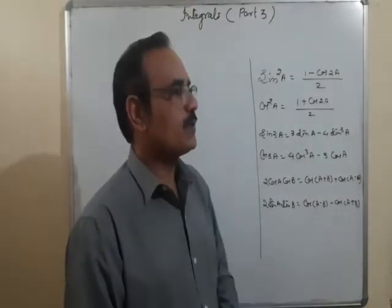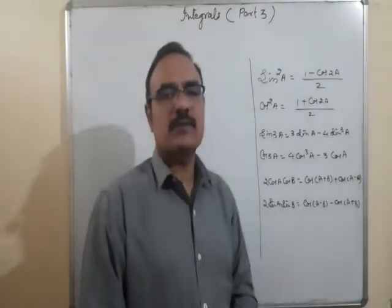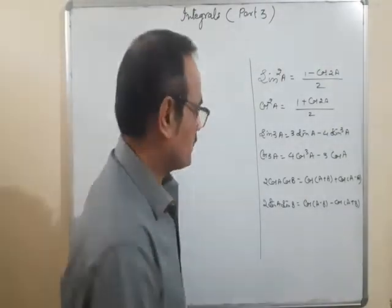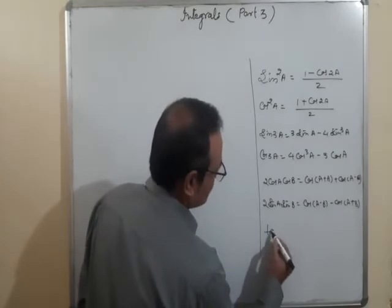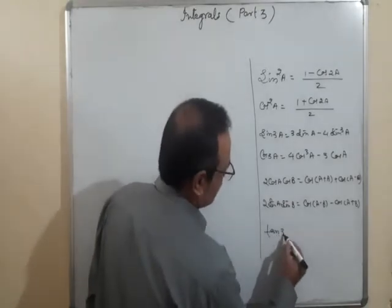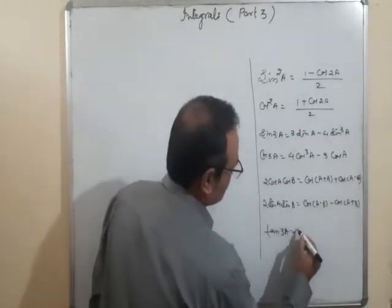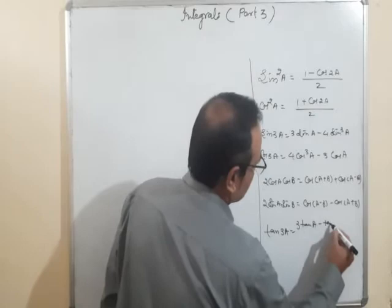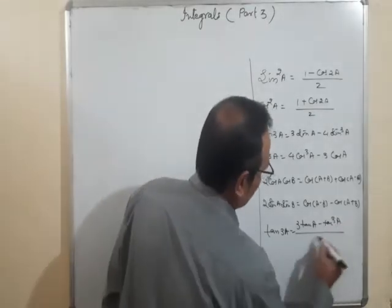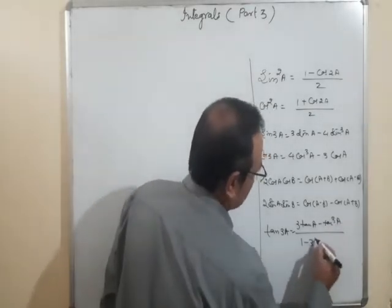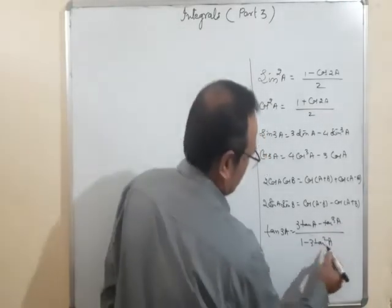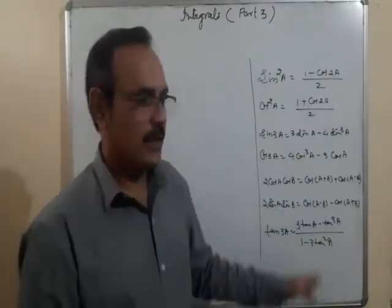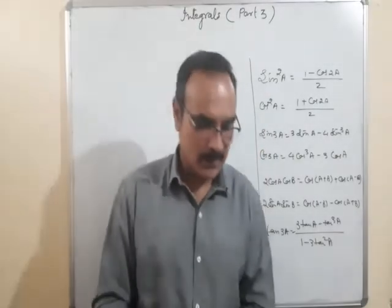If sin³A is given, we write sin³A = (3sinA − sin3A)/4. Cos³A = (cos3A + 3cosA)/4. If cosA·cosB is given, multiply and divide by 2: 2cosA·cosB = cos(A+B) + cos(A−B), so terms become simpler to integrate. Also, tan3A = (3tanA − tan³A)/(1 − 3tan²A), though this may not be used often.